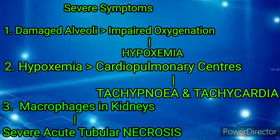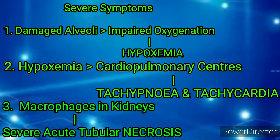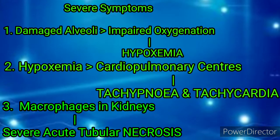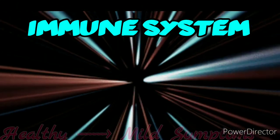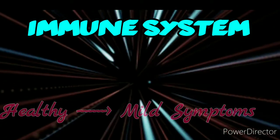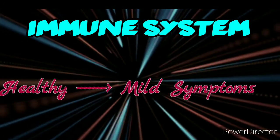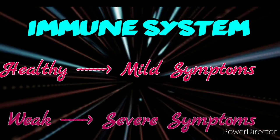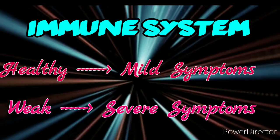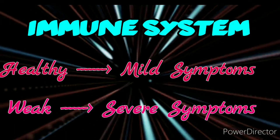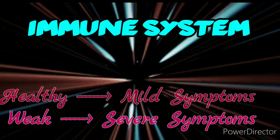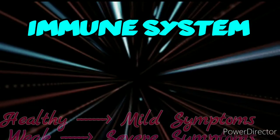Kidneys show severe acute tubular necrosis with lymphocytosis and macrophage infiltration. In summary, COVID-positive patients may be asymptomatic or show mild symptoms like mild cough, fever and shortness of breath if their immune system is strong, healthy and in check. Or they may show severe symptoms like injured lung parenchyma, pulmonary edema, impaired ventilation-perfusion ratio, hypoxemia, tachypnea, tachycardia, etc., which leads to hospitalization if their immune system is weak or impaired.